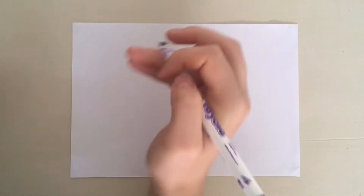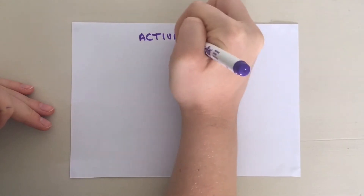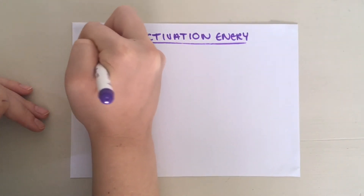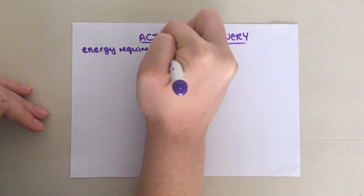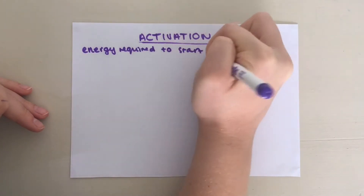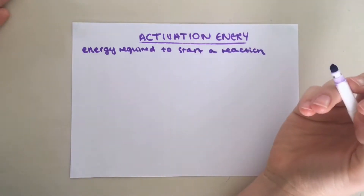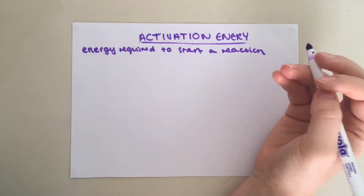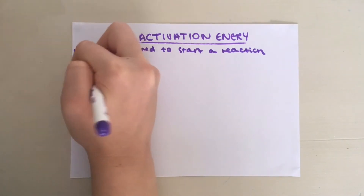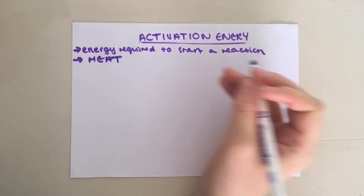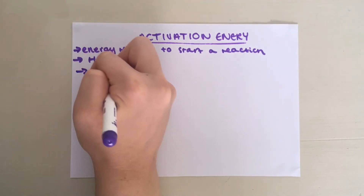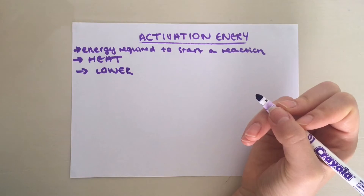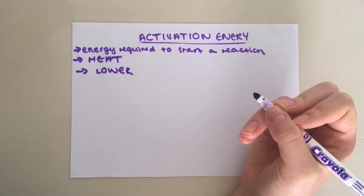Now let's take a look at activation energy. This is defined as the energy required to start a reaction — in other words, to break existing bonds so that new bonds can form. Activation energy is usually provided in the form of heat. Enzymes lower the activation energy, and this is essentially how they speed up chemical reactions. There are a few ways in which they can do this.